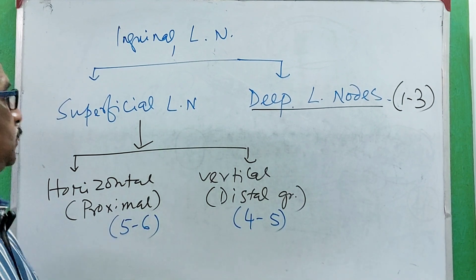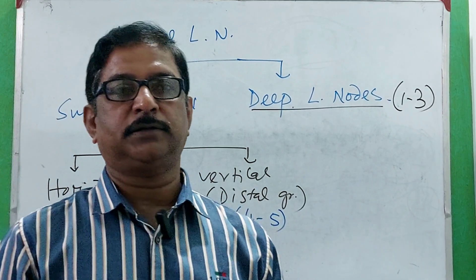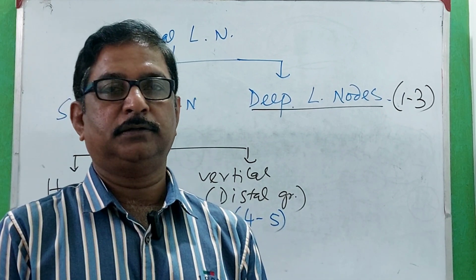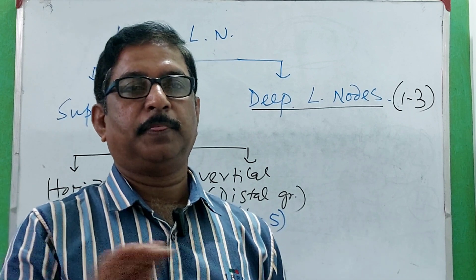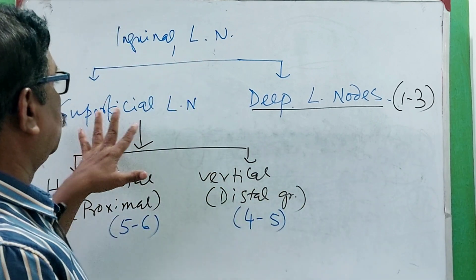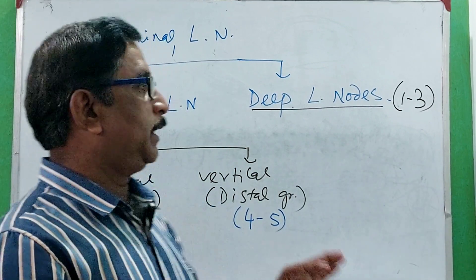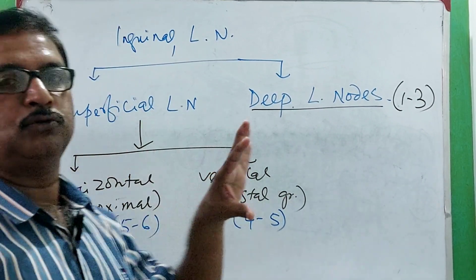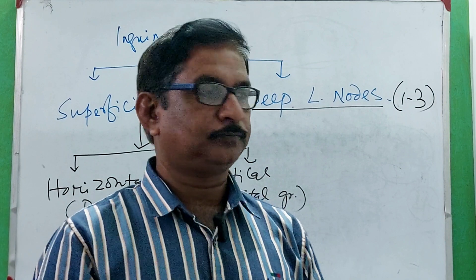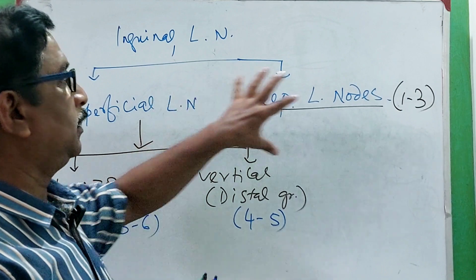The question may arise: what do you mean by superficial and deep lymph nodes — in respect to what are these superficial and deep? The deep fascia of the thigh is the layer of reference. Superficial to this deep fascia is the superficial group of lymph nodes, and deep to the deep fascia is the deep group of lymph nodes. The superficial group accompanies the superficial veins, and the deep group accompanies the deep arteries.